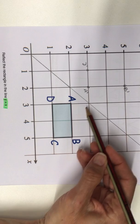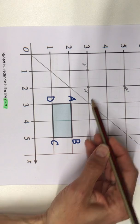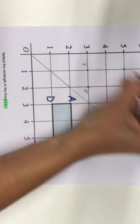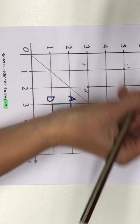And C is 1, 2 diagonals away. So on the other side of the mirror line, 1, 2 diagonals away. That is C' dash.